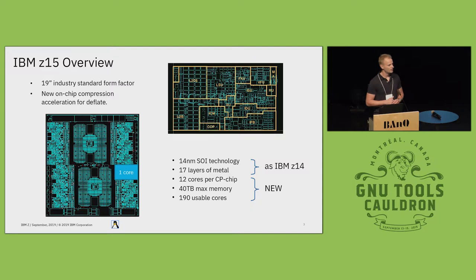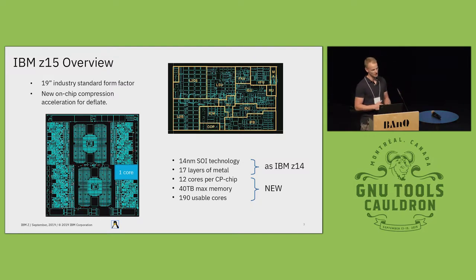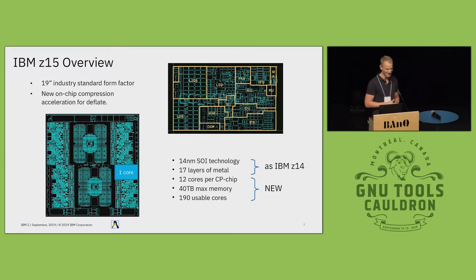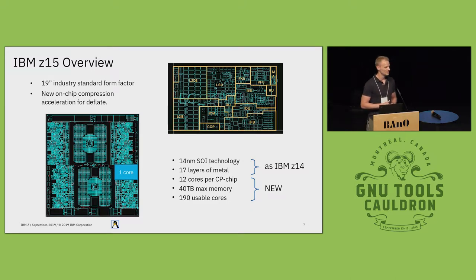The Z15 supports 40 terabytes of maximum memory — David already mentioned it, so that might be the future GCC post — and up to 190 usable cores. We had 170 cores with Z14, and by the way 32 terabytes of memory with Z14.